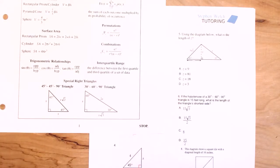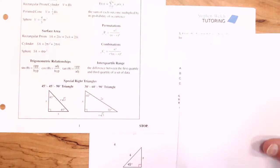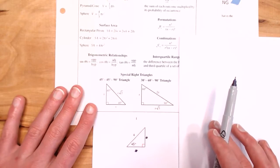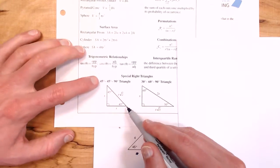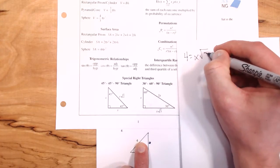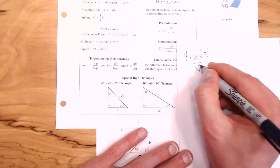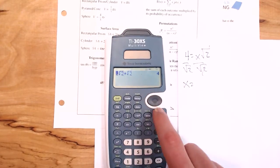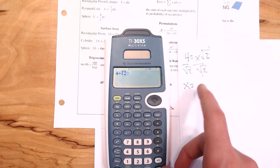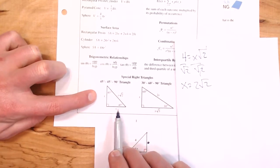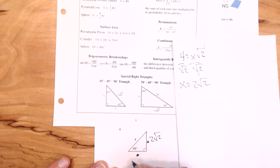Number four is a 45-45-90 triangle. I'm finding two missing sides. The long side of this triangle matches the long side of the reference triangle, so four equals X root two. Dividing both sides by root two gives X equals four over root two, which is two root two. Both missing sides on this triangle are X, so both missing sides equal two square root two.